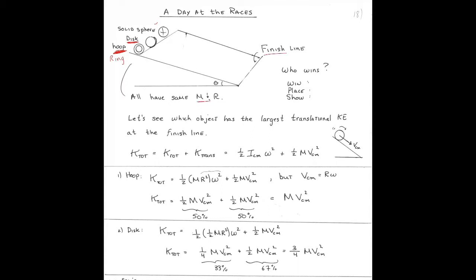All of these are made to have the same mass and the same radius. I want to figure out which one's first, which one's second, which one's third. The one that's going to win is the one that's going to be going the fastest at the bottom — whichever one has the biggest speed of the center of mass.